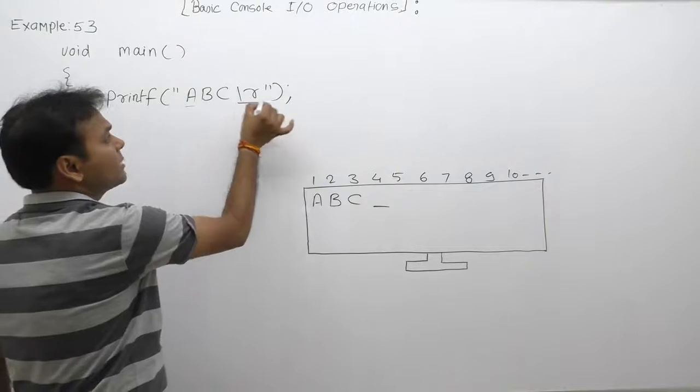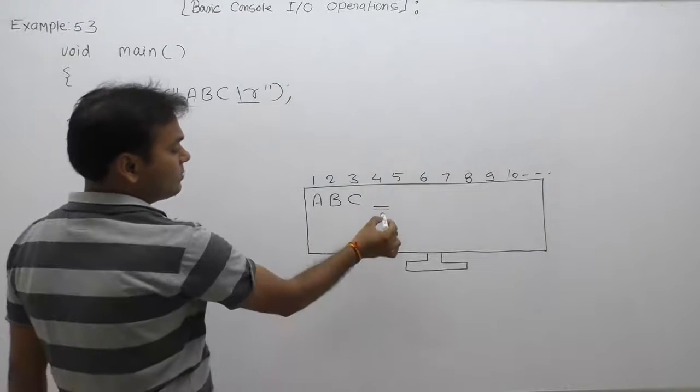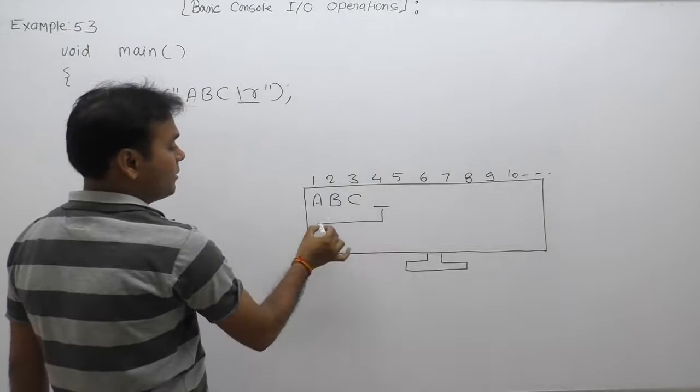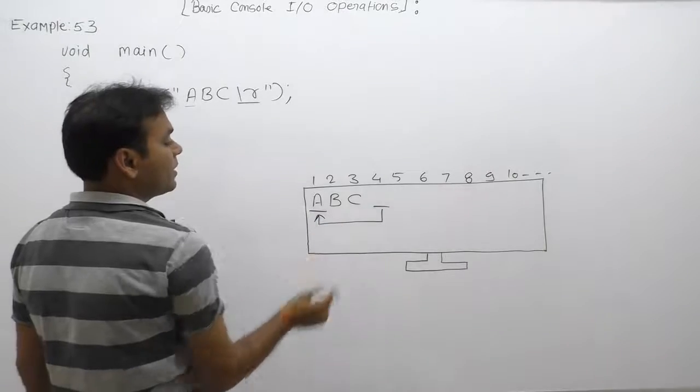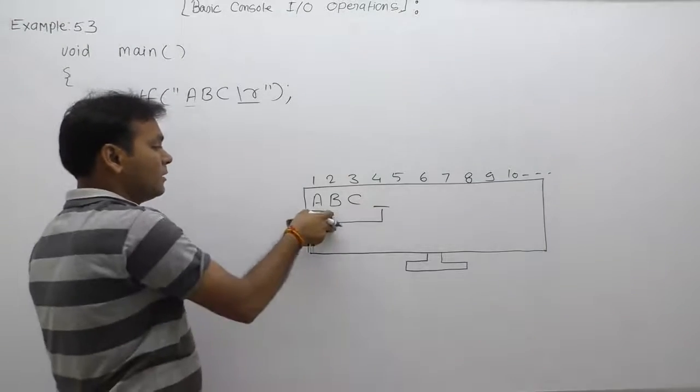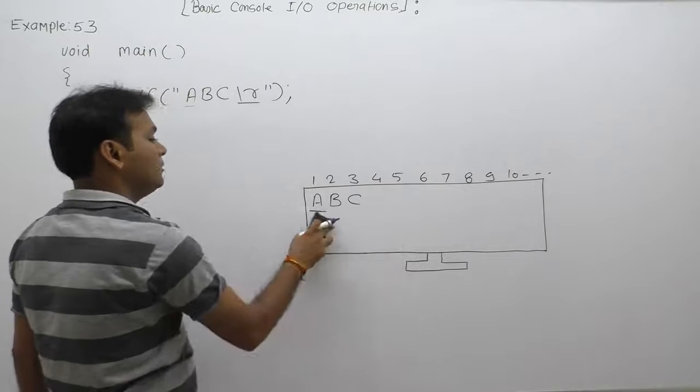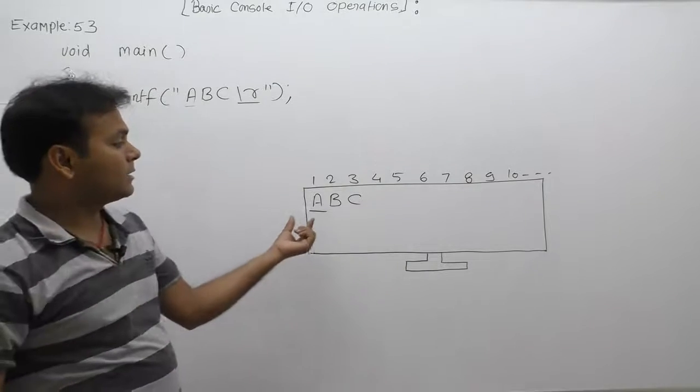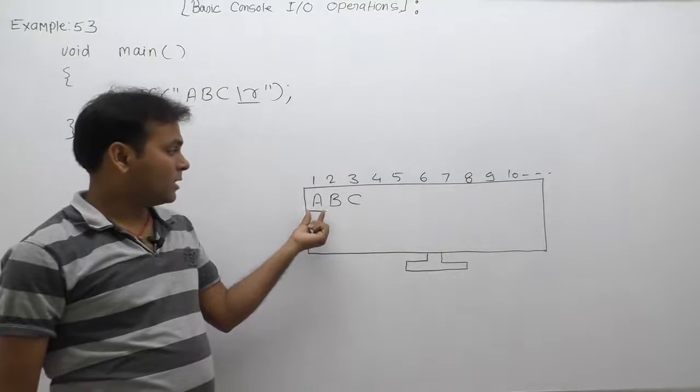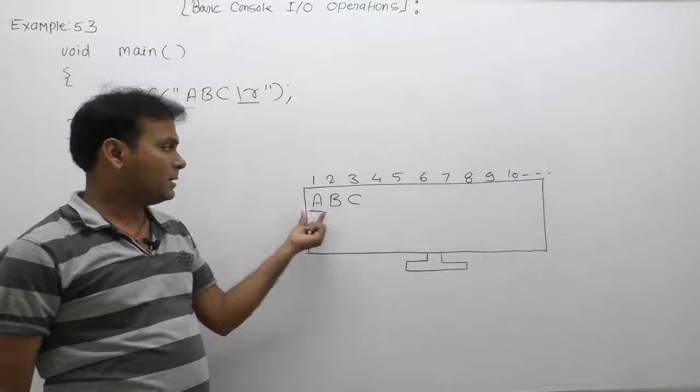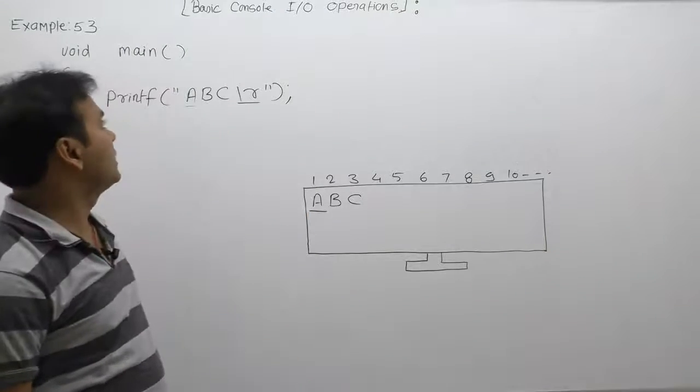Then next one, slash r. According to slash r, cursor will be shifted to the first position of the current line. Means after executing this printf statement, you can see output like that. Cursor will be blinking on the first character of the current line inside a. This is the final result of that code.